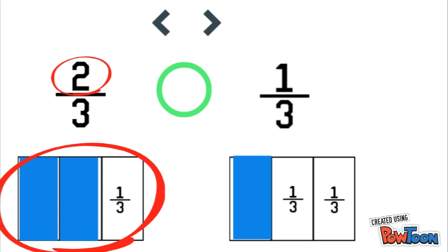Now, to decide which symbol to use to compare these, think of it like an alligator that wants to eat a bigger fraction. So we'll use this symbol because it's eating the side of two thirds. So we would read this as two thirds is greater than one third.